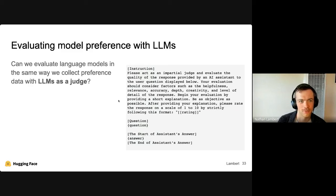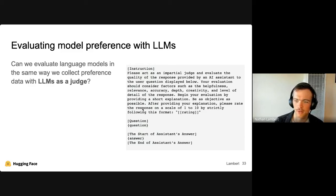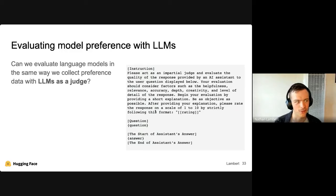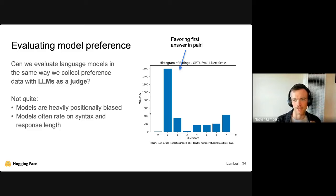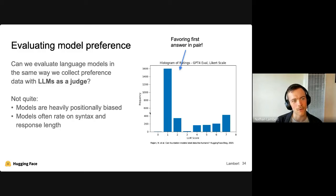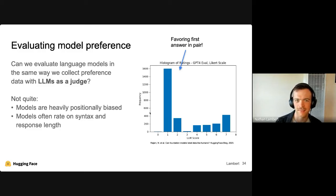So people tried evaluating language models with a better language model like GPT-4, prompting it to rate responses from 1 to 10. But there are issues: heavy positional bias when showing two responses one after another, and GPT-4's evaluation is often correlated with the number of tokens or length of the response. We're in the early days — this is a powerful tool, but we're fighting bias and unclear metrics.